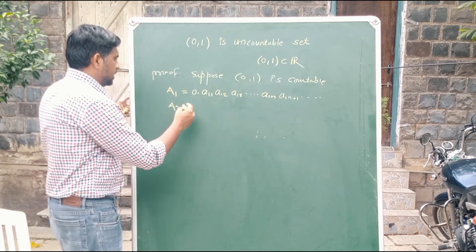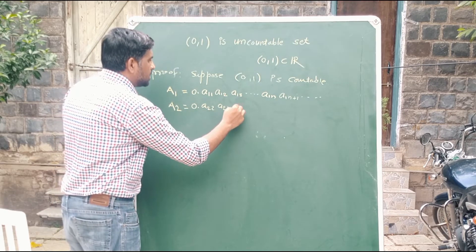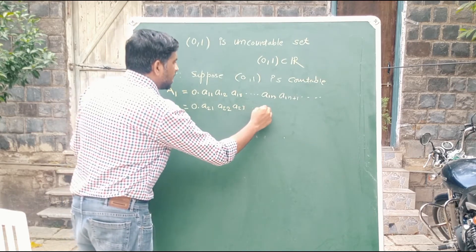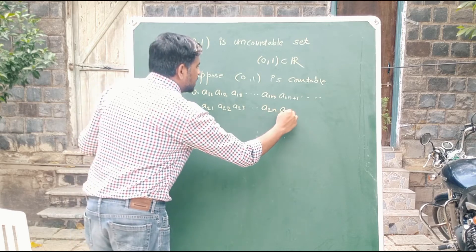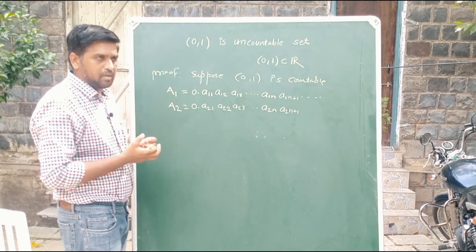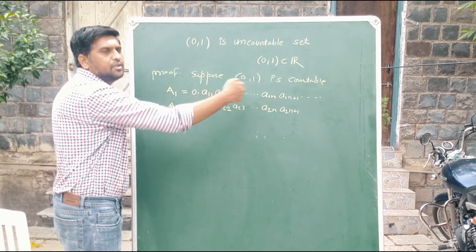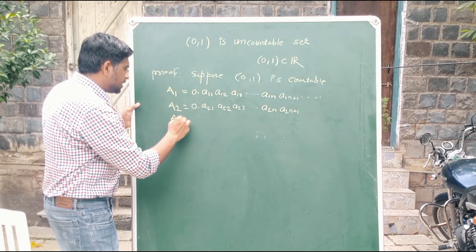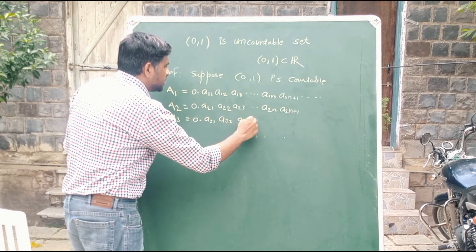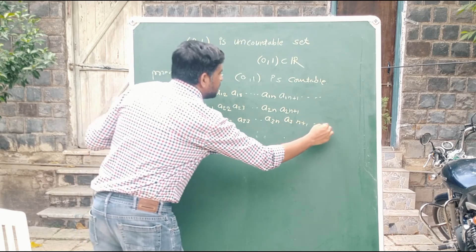Similarly, a₂ = 0.a₂₁ a₂₂ a₂₃ ... a₂ₙ a₂ₙ₊₁ and so on. We define the entries in a matrix-like format. And a₃ = 0.a₃₁ a₃₂ a₃₃ ... a₃ₙ a₃ₙ₊₁ and so on. Each aᵢⱼ represents the j-th digit of the i-th element.